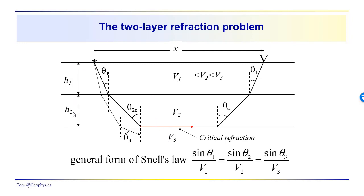The layer thicknesses are h1 and h2 — they don't have to be similar in thickness to each other. The source generates a mechanical disturbance which propagates down into the subsurface in all directions. Here we're looking at just one ray path — ray paths are propagation paths drawn normal to the wavefront. That ray path comes down, refracts into layer 2 at an angle theta 2 greater than theta 1 because v2 is greater than v1, and when it hits the interface between layers 2 and 3, it refracts again and theta 3 is greater than theta 2.